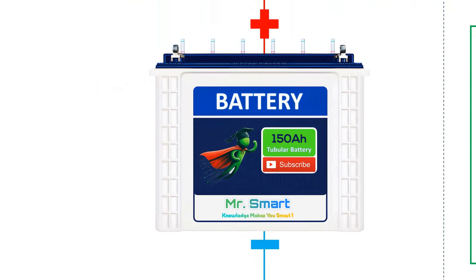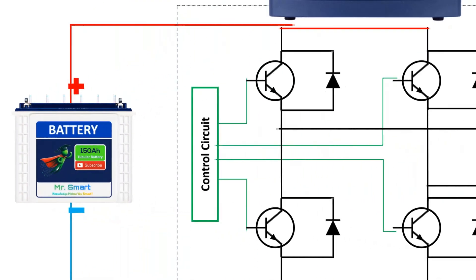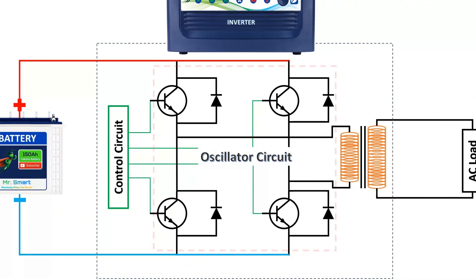The battery is the power source that provides the DC electricity. Inside the inverter, we have an oscillator circuit, control circuit, and a transformer to convert the DC power source from the battery into AC.